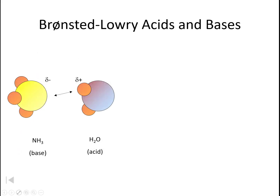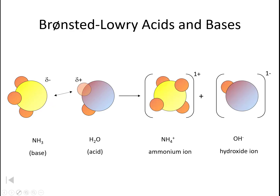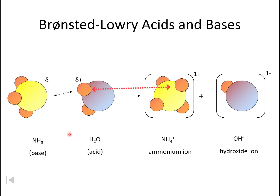Here's our ammonia and our water. When we mix them together, the water is going to give away a hydrogen to the ammonia. That turns the ammonia into ammonium, and our water is now a hydroxide ion. That's why in this case our water is acting as an acid. You may be thinking — water is an acid? Well, it's a Bronsted-Lowry acid because it gave away its hydrogen.